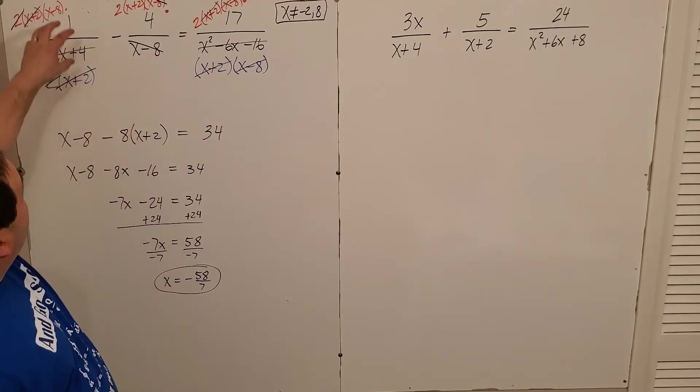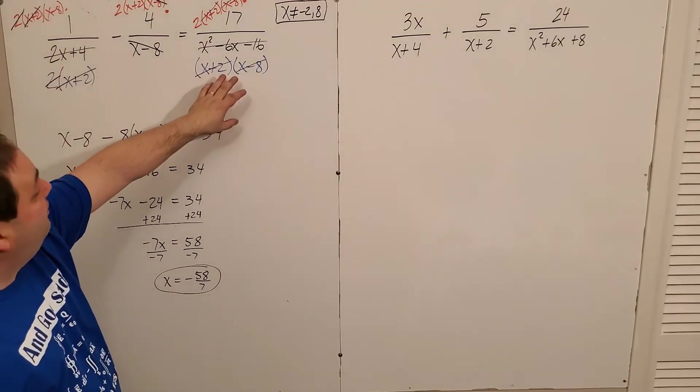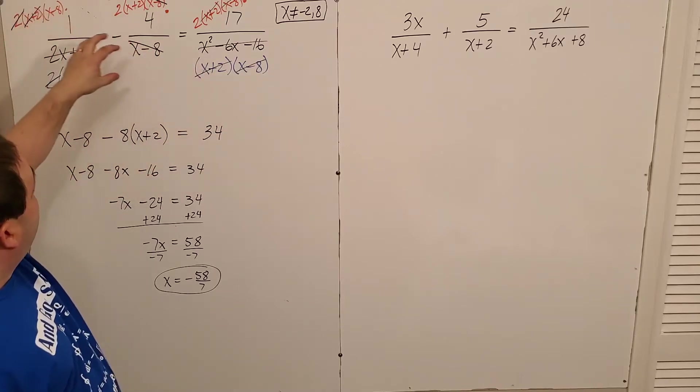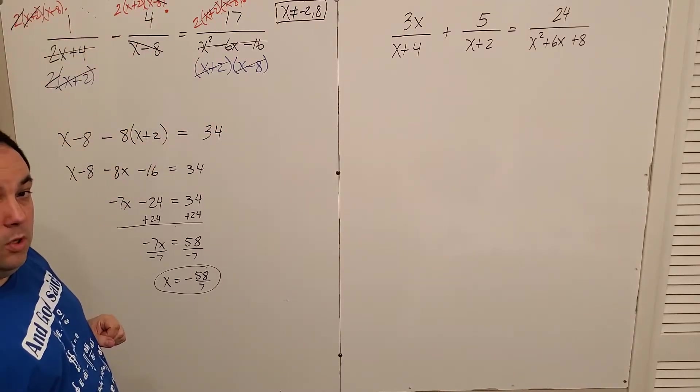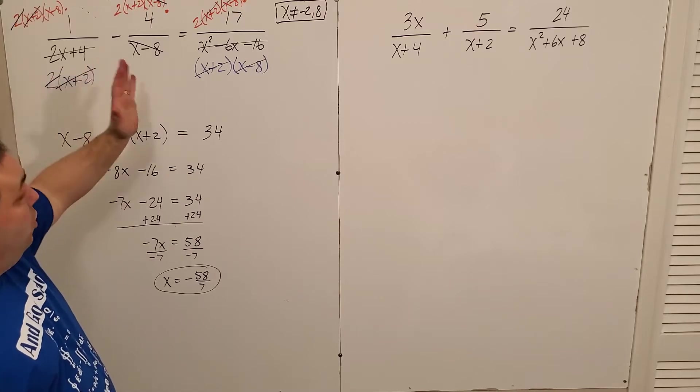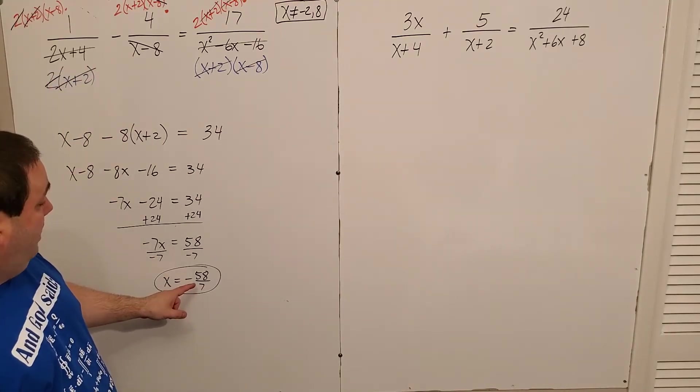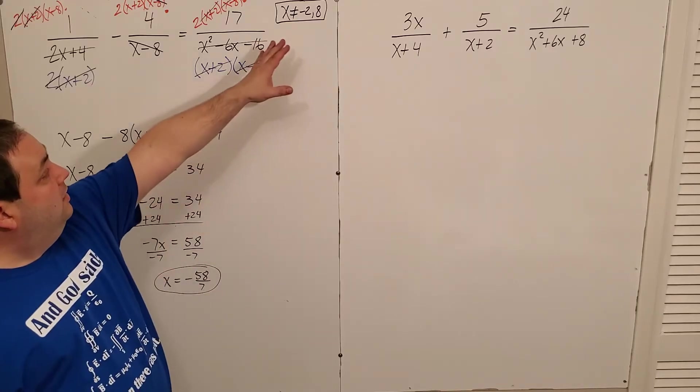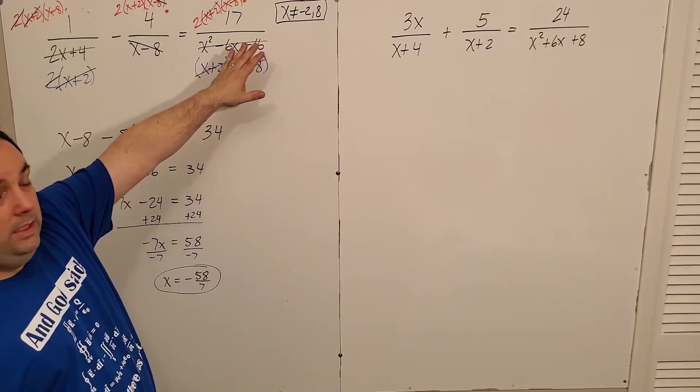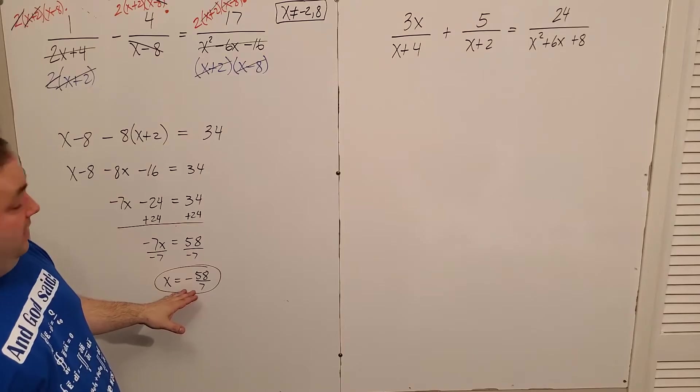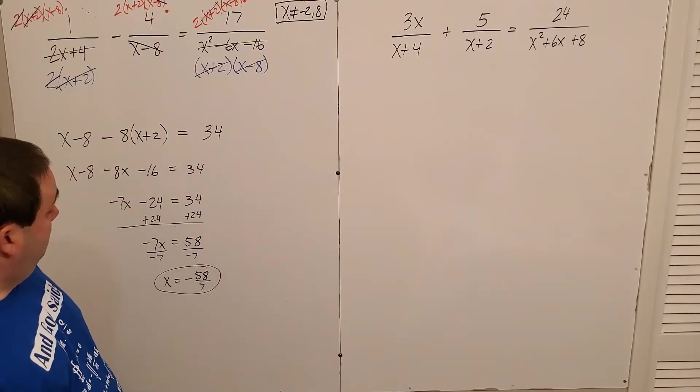So the idea is the same. I just have more pieces going on here. I have to factor and then take each one of those pieces one at a time, right? Just do one, one piece at a time. It'll help you out. Don't forget to compare, right? Negative 58 over seven to the original things that x couldn't be. We're safe in this case, right? We're all good on that one.